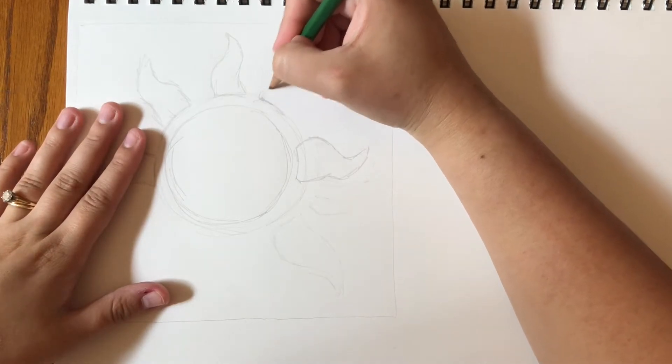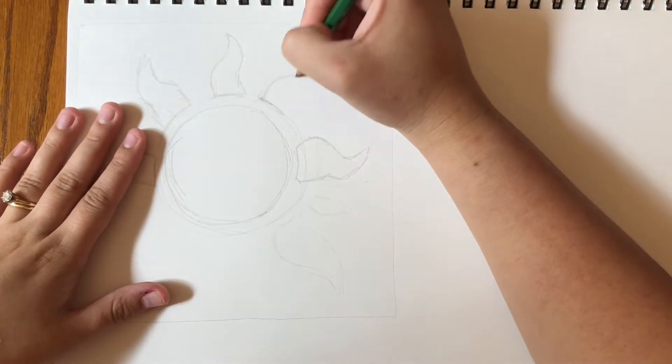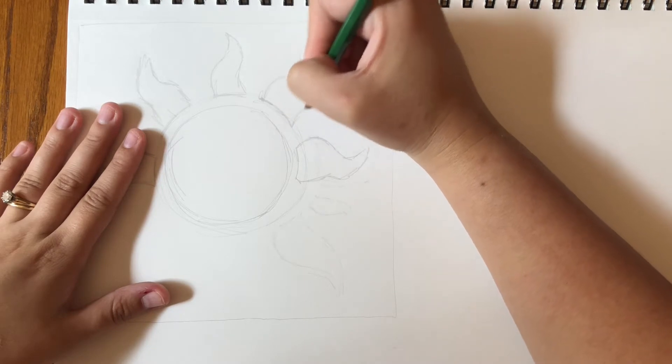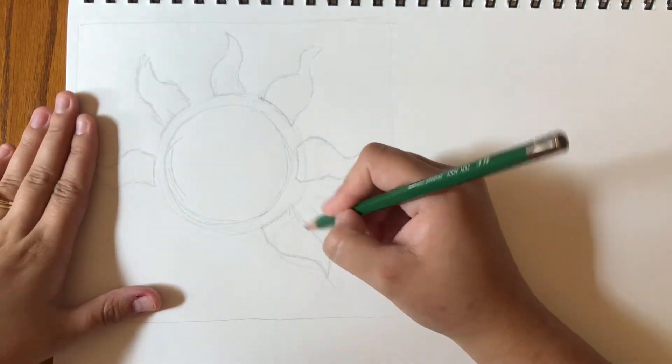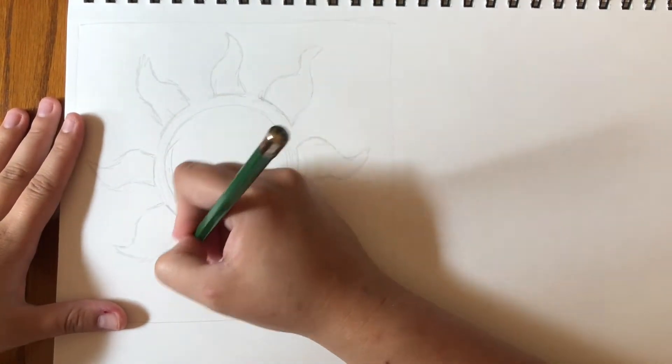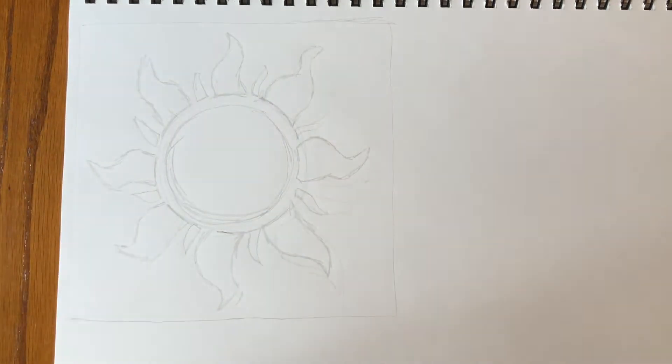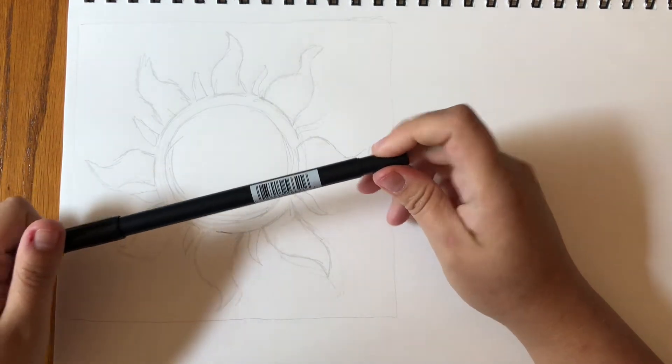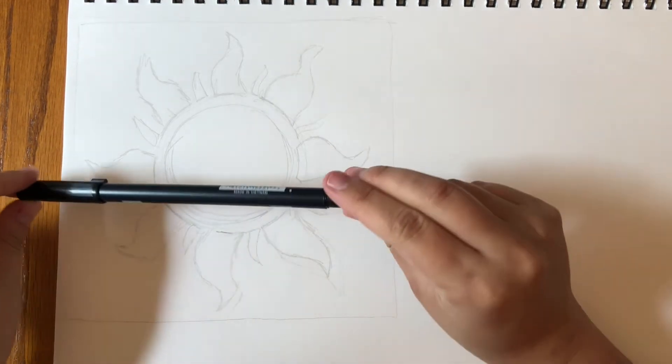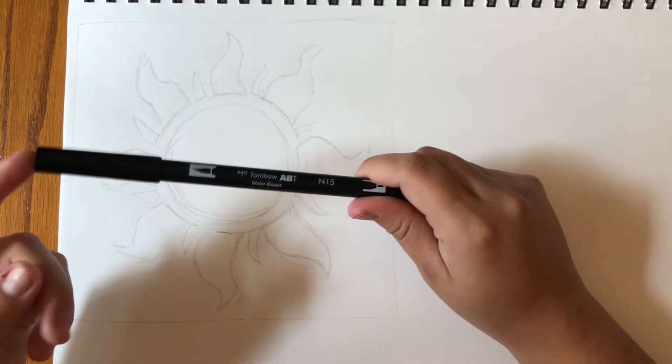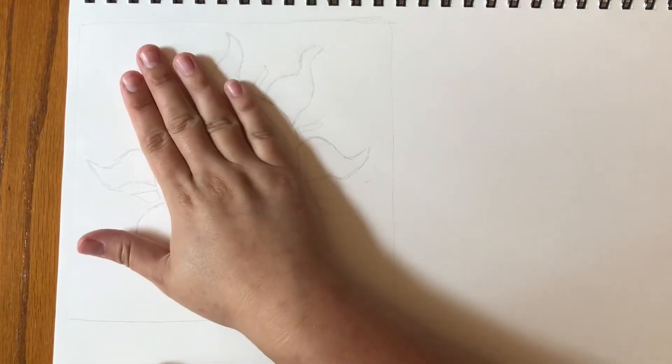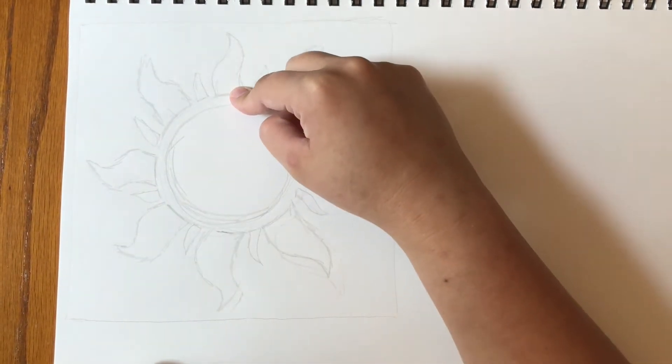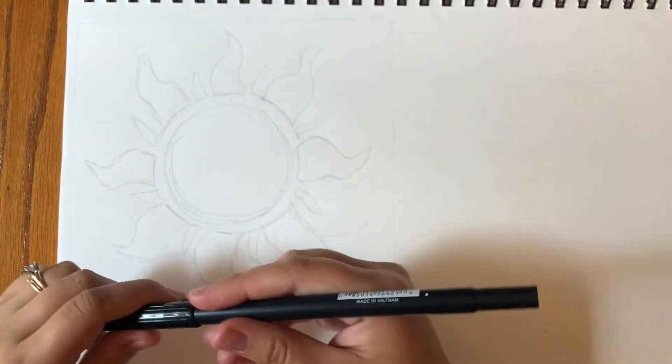When we make stencils we want to be really careful that we're making a design that has a sort of structural integrity when we cut it out. We don't want any pieces hanging loose.